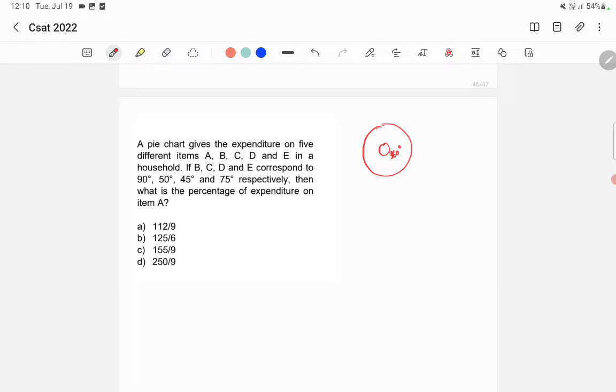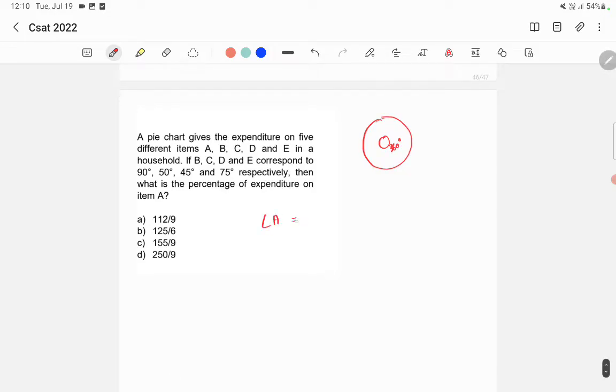Here B corresponds to 90 degree, C to 50, D to 45 and E to 75. So the angle of A is equal to 360 minus 90 plus 50 plus 45 plus 75.